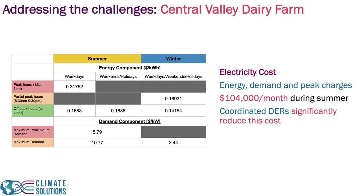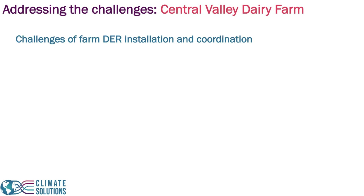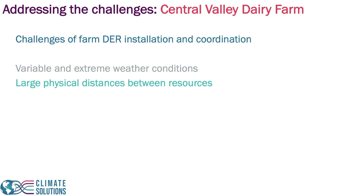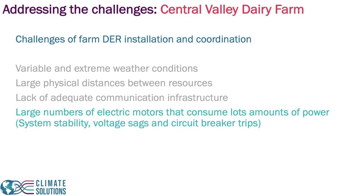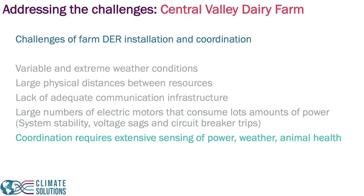Adding DR coordination at the farm can significantly reduce these costs as well as carbon emissions from electricity. DR installation and coordination in a farm is challenging: it is an uncontrolled environment with variable and extreme climate conditions, resources spread over long distances, and little or no existing communication infrastructure. The main loads are motors used in ventilation, which consume significant amounts of power and impose complexities including system stability challenges, multi-phase operation, and the need for application-specific sensing of power, weather, and animal health.